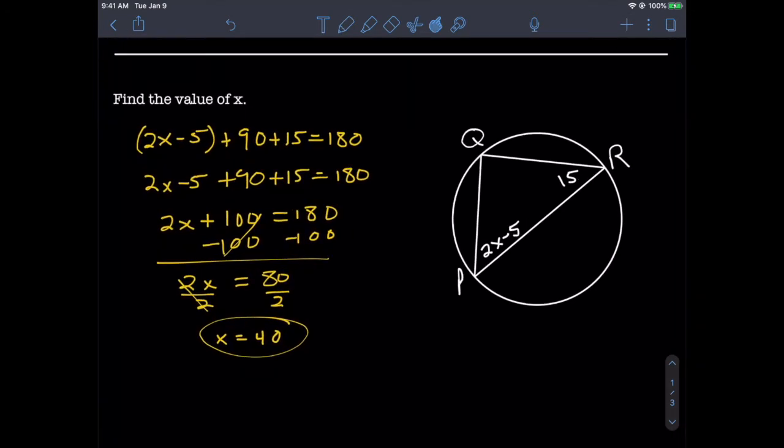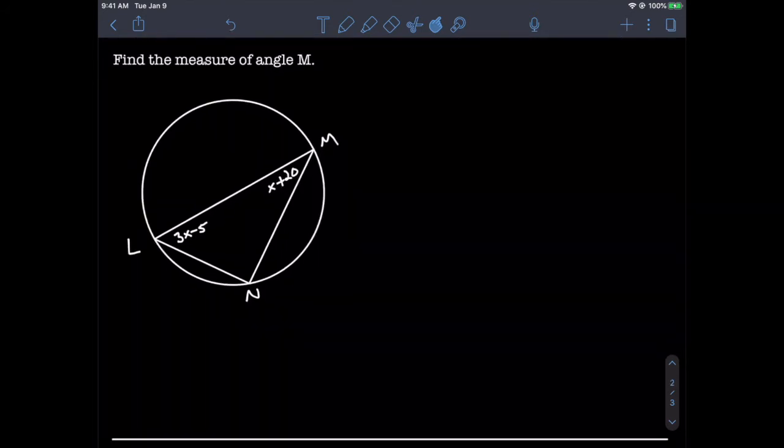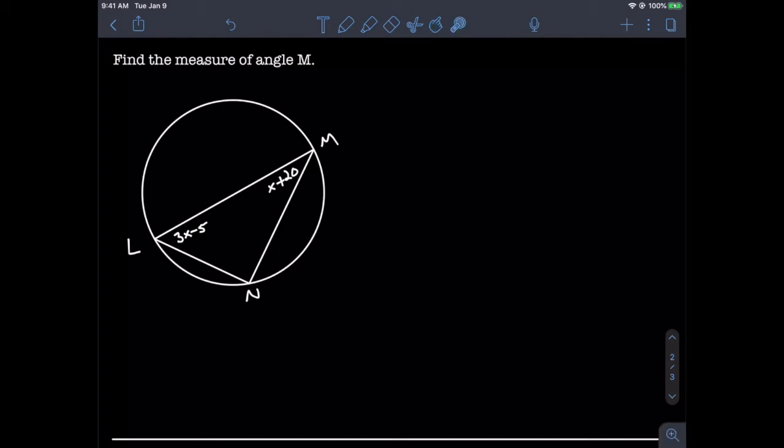Let's take a look at something a little different. This time we're asked to find the measure of angle M, which is x + 20. Since the measure of angle M depends on x, our course of action is to solve for x like we normally would, then plug in whatever x is to x + 20. First, we have a triangle inscribed inside a circle where one of the sides is the diameter, which means angle N is a 90-degree angle.